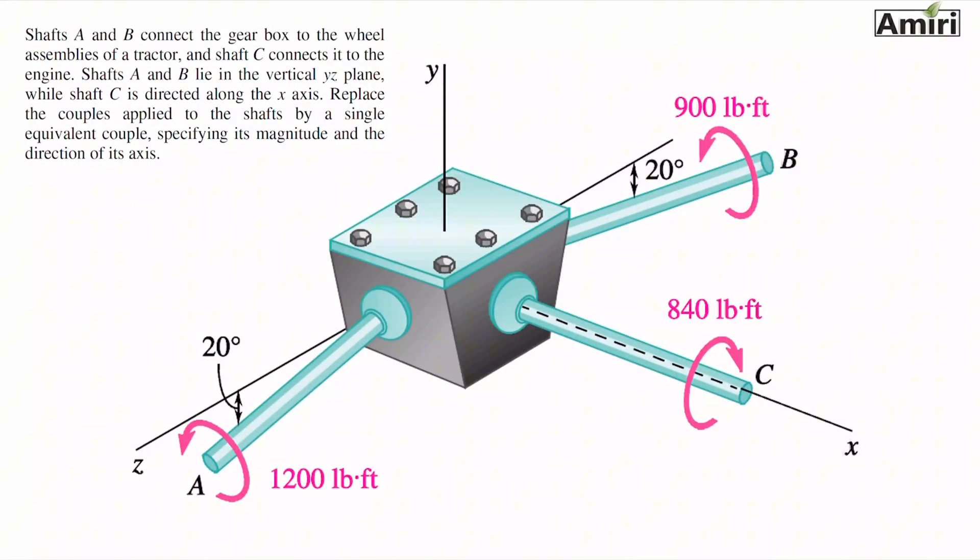Hello, let's look at another problem with equivalent systems. This one says shaft A and B connect the gearbox to the wheel assemblies of a tractor, and shaft C connects it to the engine. So the power comes through shaft C to the gearbox and gets distributed to the two wheels.